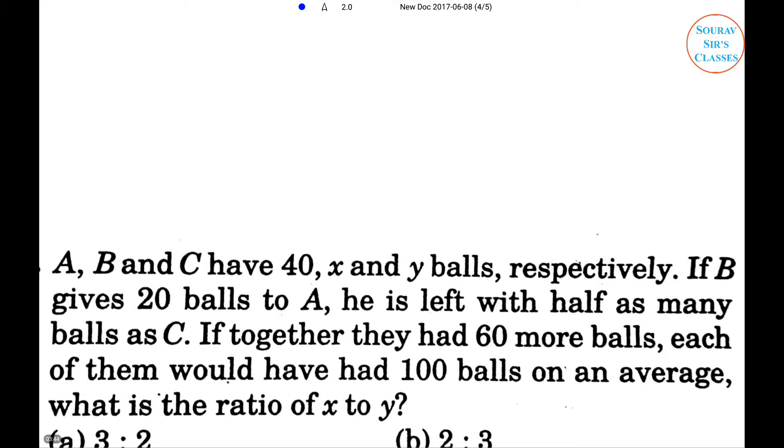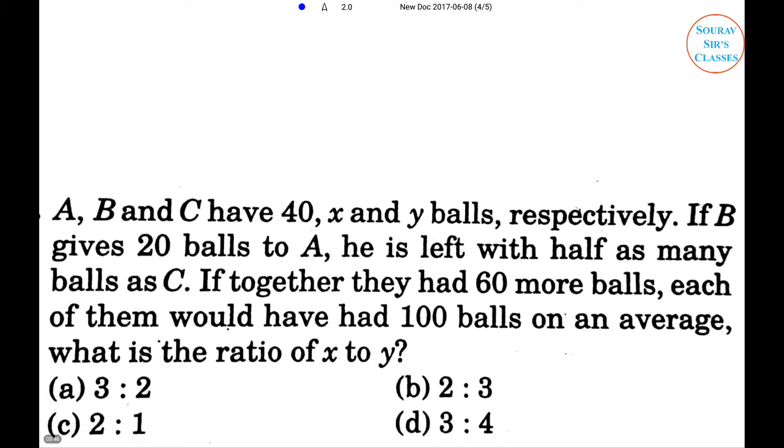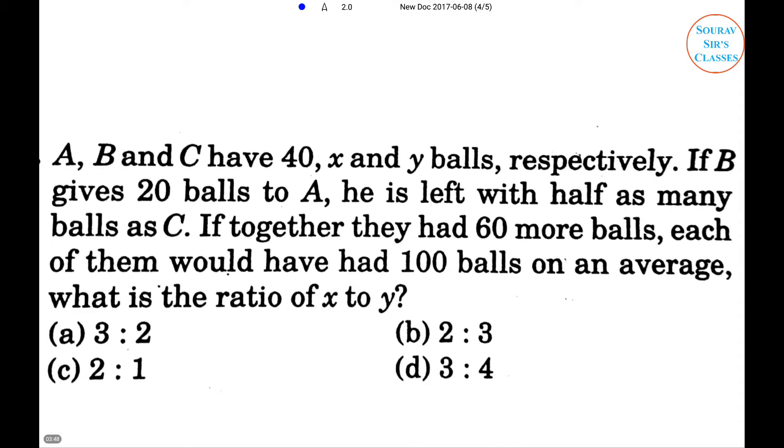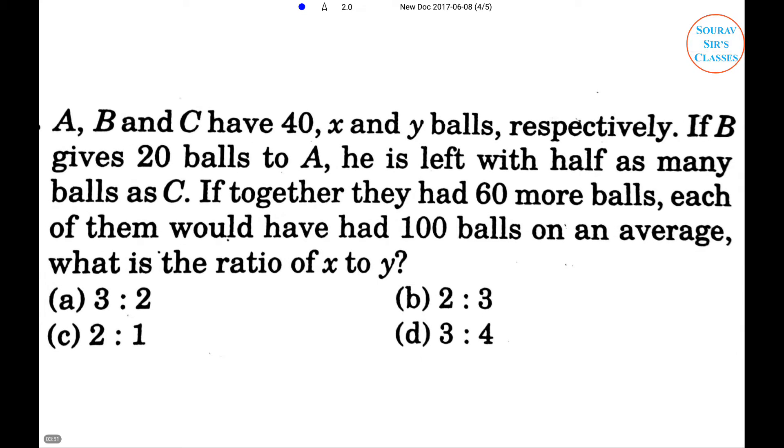Next problem: A, B, and C have 40, x, and y balls respectively. If B gives 20 balls to A, he is left with half as many balls as C. If together they had 60 more balls, each of them would have had 100 balls. On average, what is the ratio of x to y?